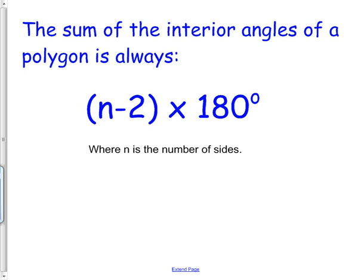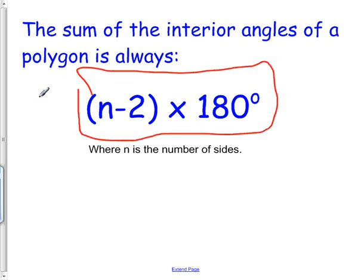So on the last slide here, this is the key idea. The sum of the interior angles of a polygon is always this formula, where n is the number of sides: n minus 2 times 180. And there you have it. So the polygon sum theorem is this equation.